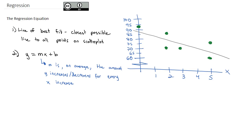Knowing what that m — that slope of the line — is can be very informative to us, because it tells us that in this case, as we were graphing missing assignments versus exam scores, the slope would tell us how much, on average, the exam scores are going to decrease for every additional missing assignment.